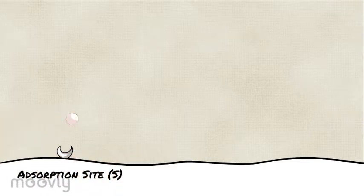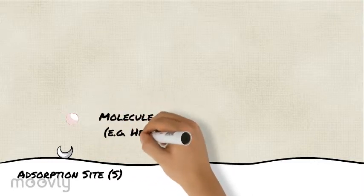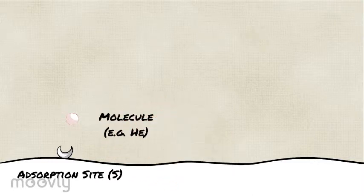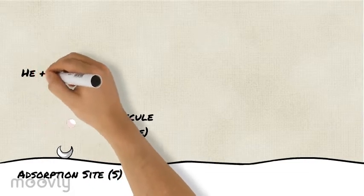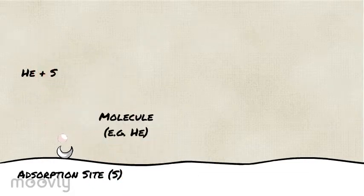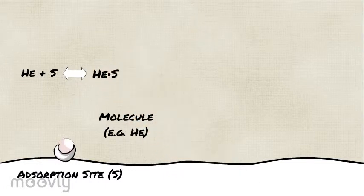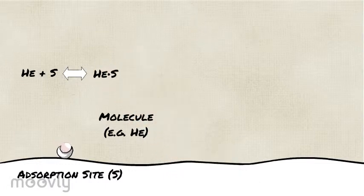If we depict a gas molecule in the fluid region, we can see that the molecule can and will eventually react with the adsorption site to form an adsorbed species — that is, a molecule chemically bonded to the adsorption site. We depict this the same way we would any chemical reaction.